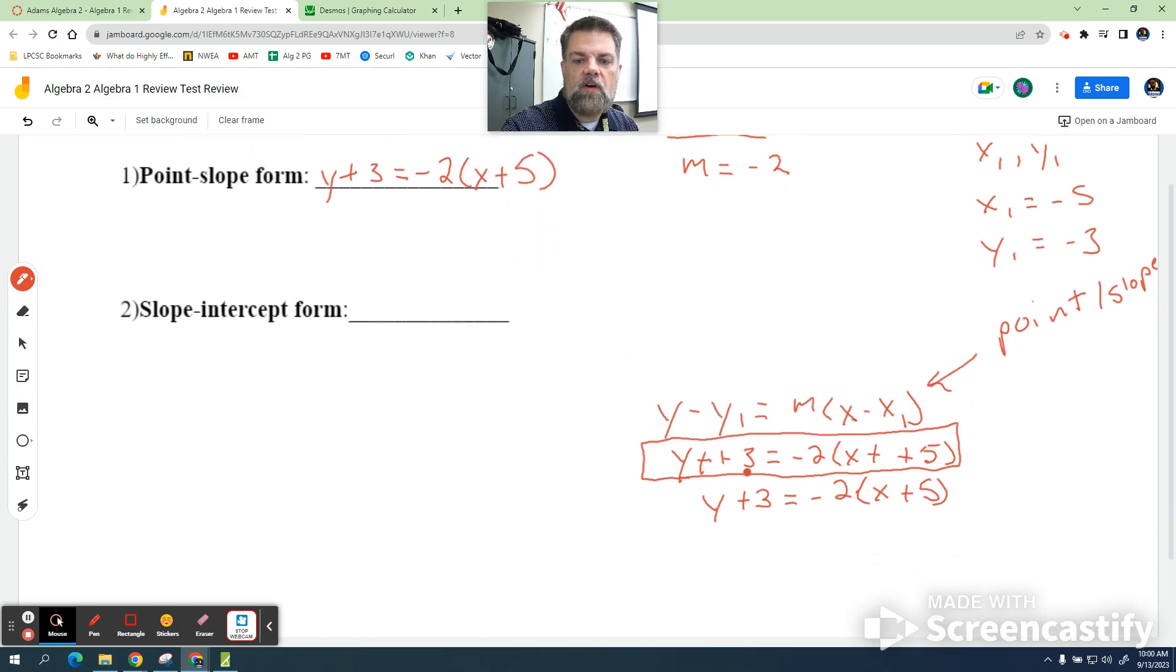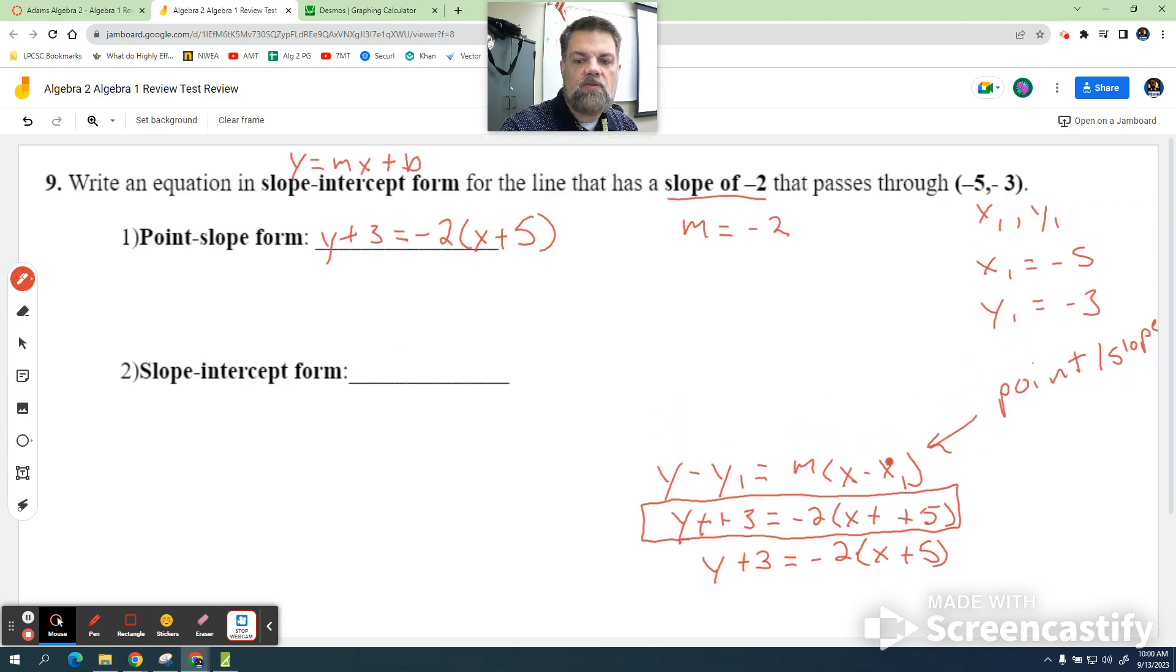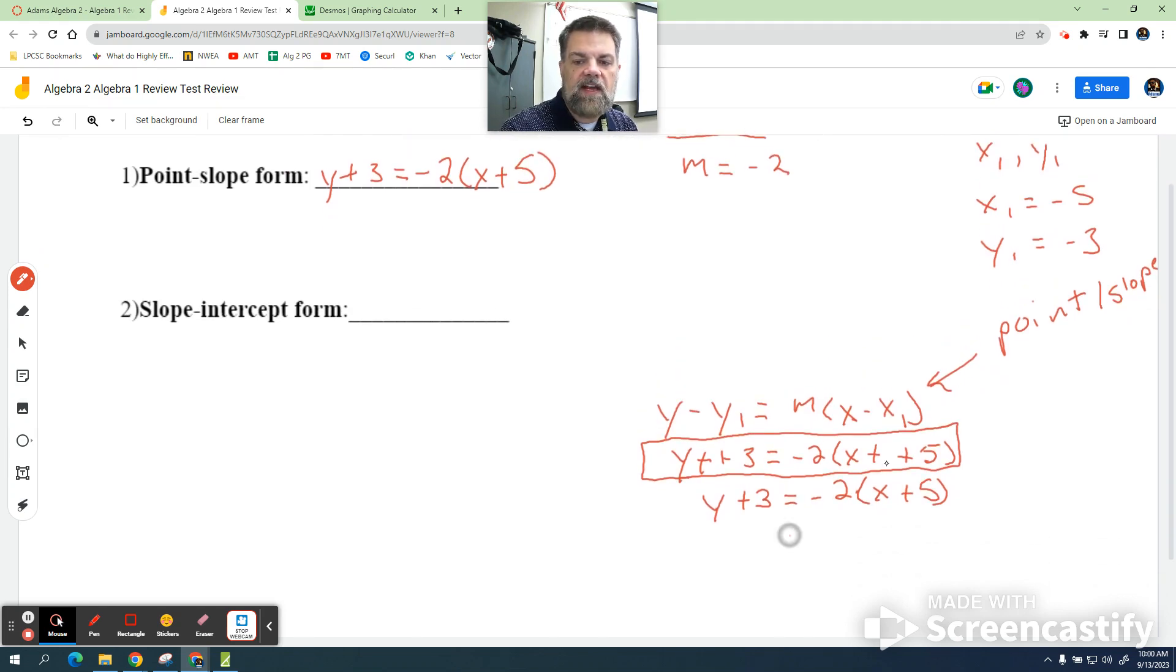Now, in order for me to get the slope-intercept form, y equals mx plus b, I got to do a little bit of math. I'm going to distribute this 2 through the parentheses. Negative 2 times x is negative 2x. Negative 2 times positive 5 is negative 10. And I have y plus 3. I'm going to subtract 3 from both sides. And I get y equals negative 2x minus 13.